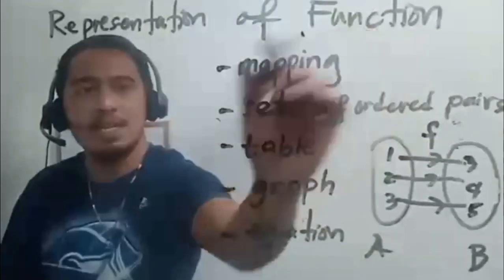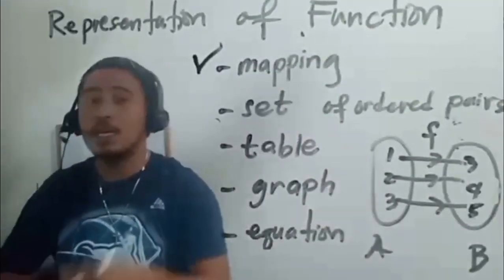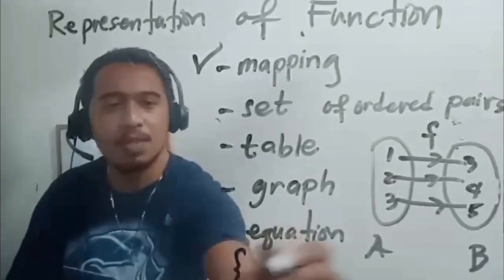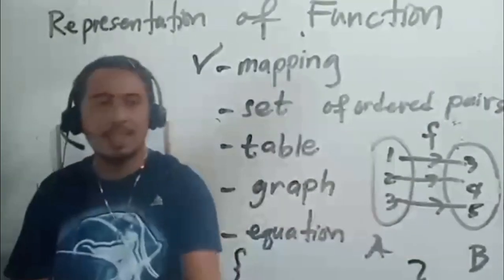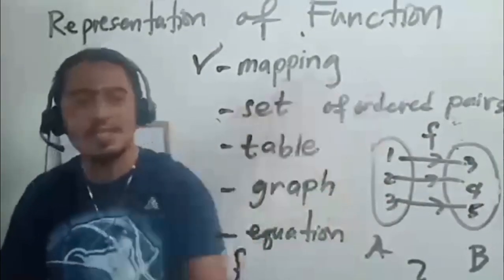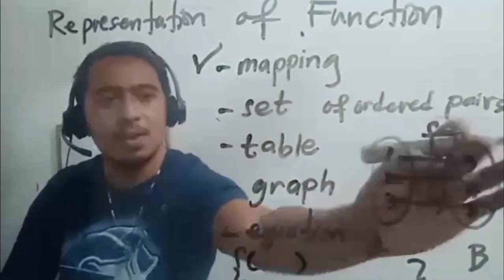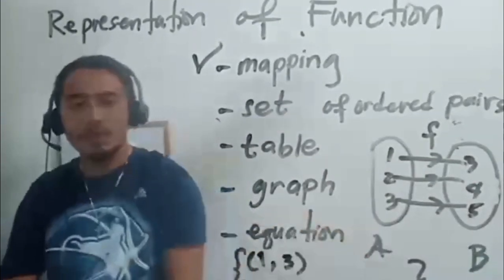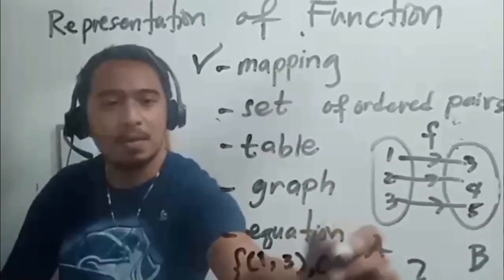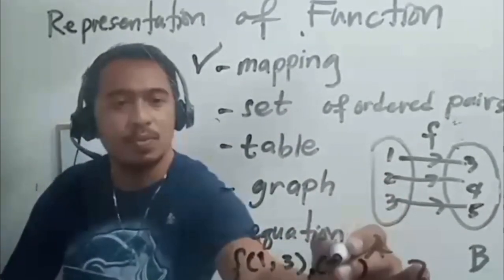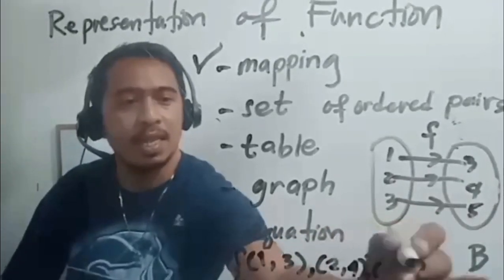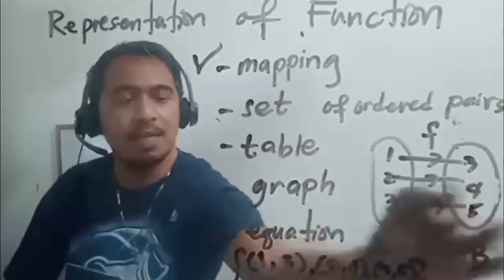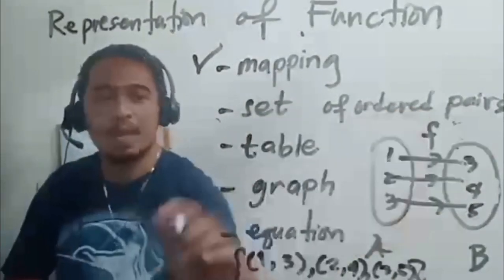A function can also be represented using a set of ordered pairs. From our mapping, we can get the equivalent representation by getting the ordered pairs. The first ordered pair has abscissa 1 and ordinate 3. The second has abscissa 2 and ordinate 4. The last ordered pair has abscissa 3 and ordinate 5. So that gives us the set of ordered pairs.